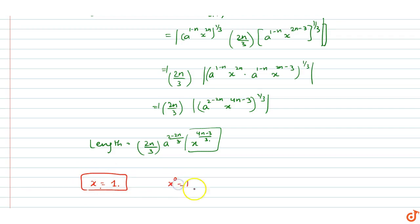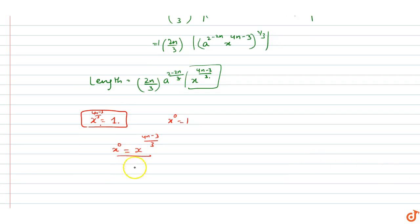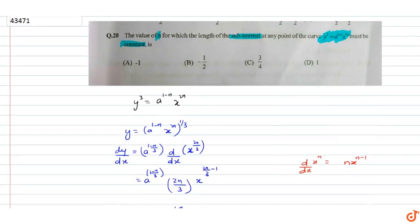For x^((4n−3)/3) = 1, we need the exponent to be zero: (4n−3)/3 = 0, so 4n − 3 = 0, giving n = 3/4. Therefore, our answer is n = 3/4, which is option C.